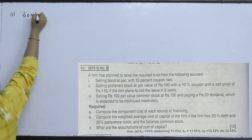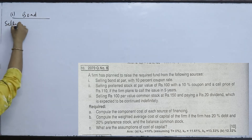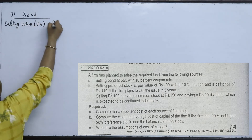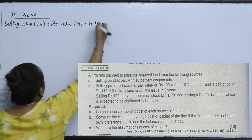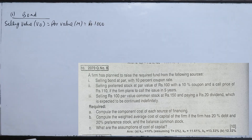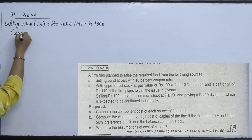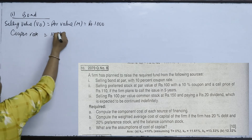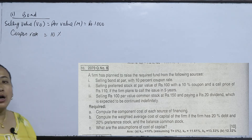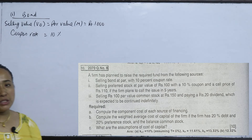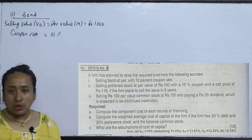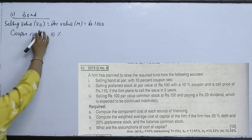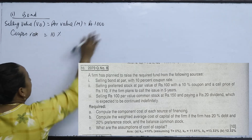We will look at the bond information. The selling value of the bond — what is V0? The par value is 1000 and the bond value is 1000, with a 10% coupon rate. We will use the bond to calculate the cost of debt.